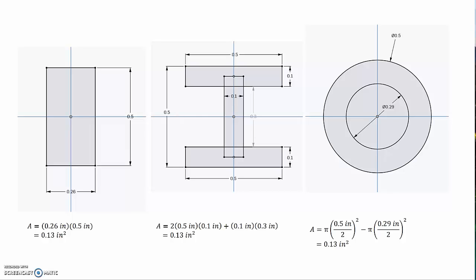Here I've dreamed up three cross sections which all have the same height. They're all half an inch tall, and they all have the same area, which is 0.13 inches squared.